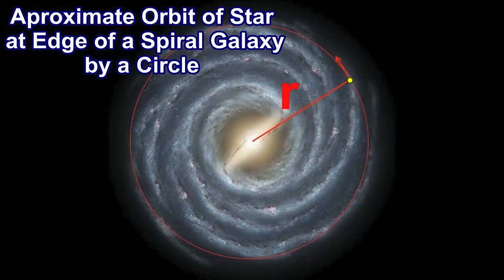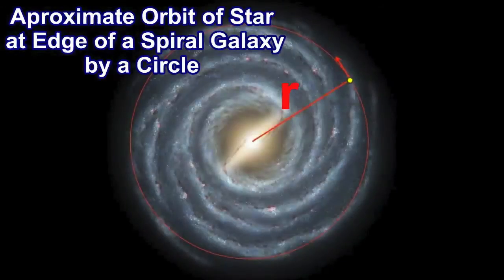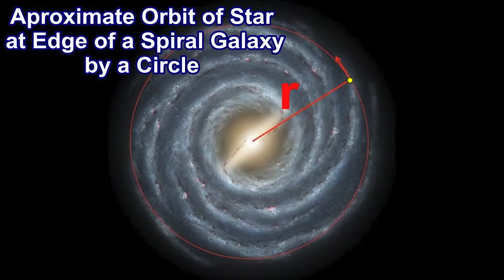This picture will probably clarify all of what I am saying. We will pick a star at the periphery of the galaxy and we can approximate the orbit of the star around the galaxy as this big red circle. Then, the straight line is the radius that connects the center of mass of the galaxy with the star itself.